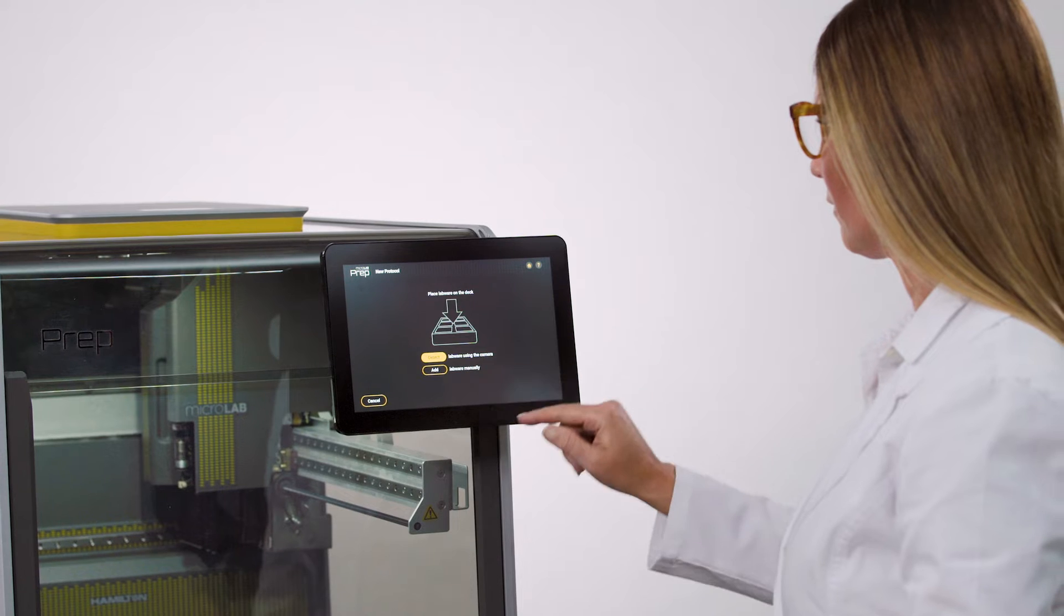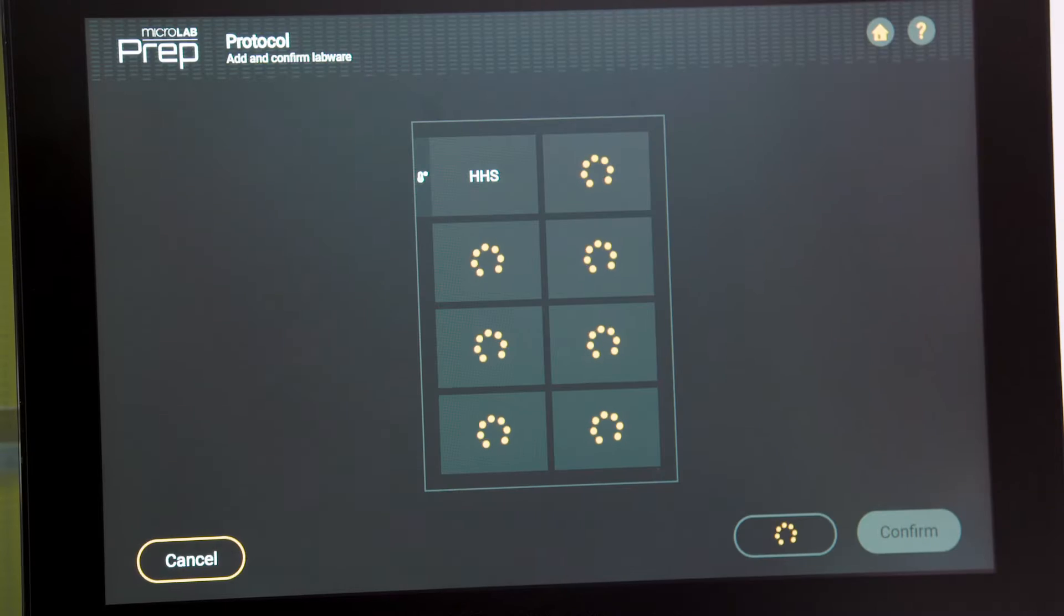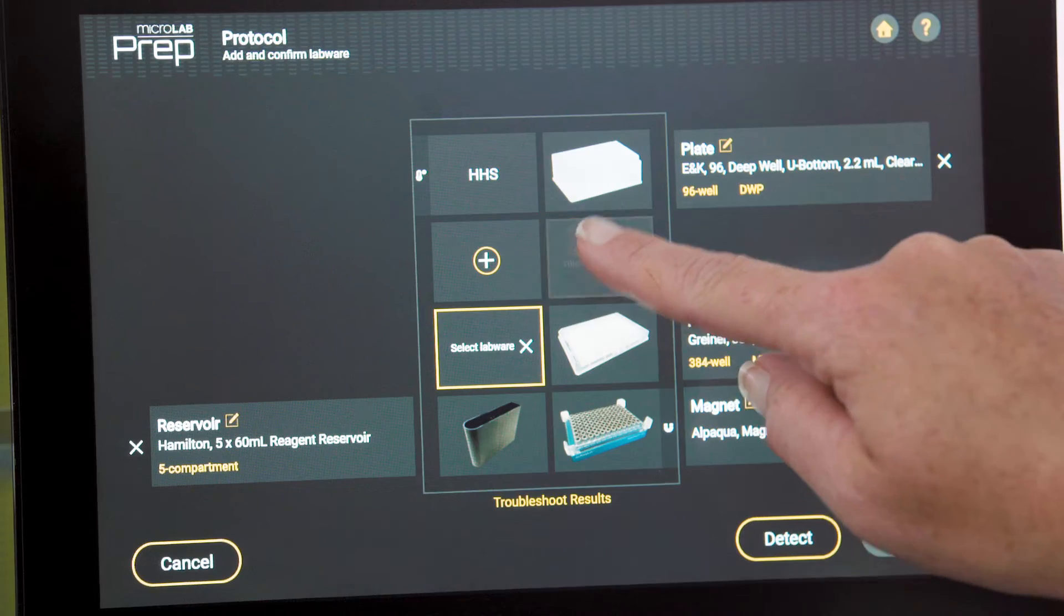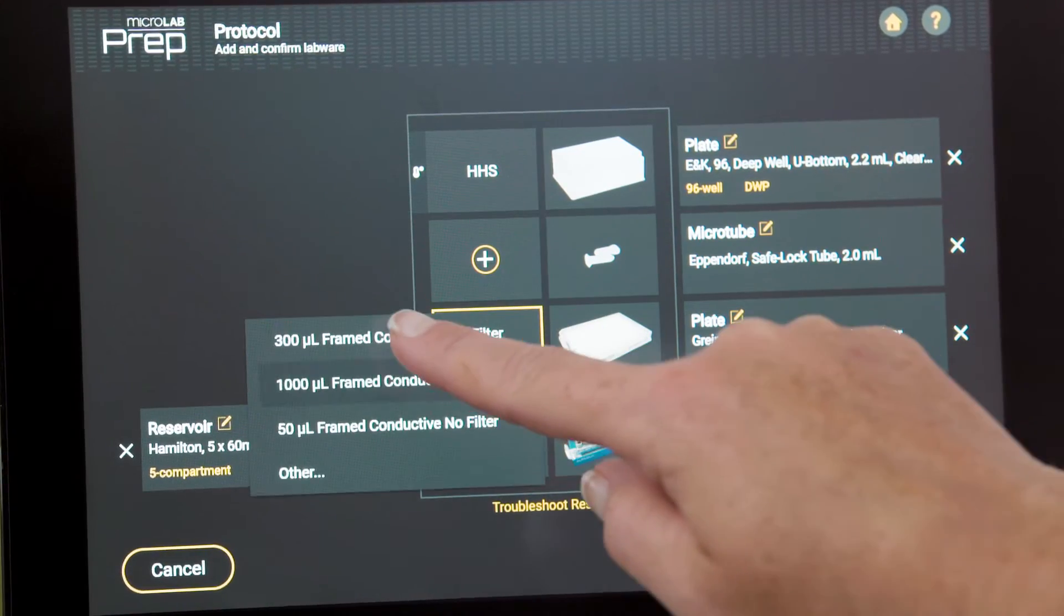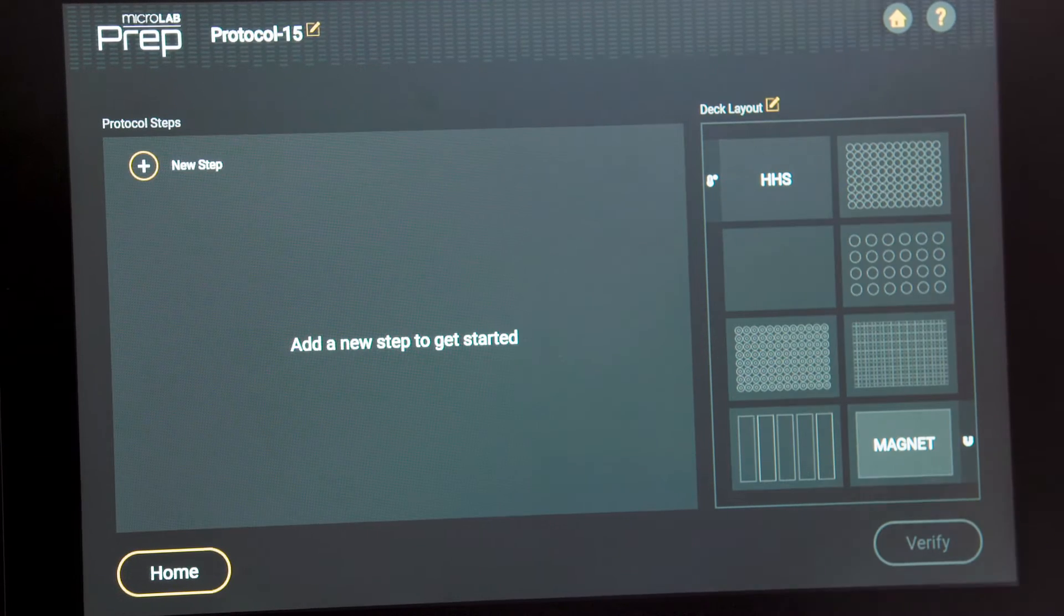The Microlab prep has a one-of-a-kind mounted camera that scans the deck and recognizes labware for quick programming. The camera helps guard against loading errors by notifying users of incorrect labware for program methods.